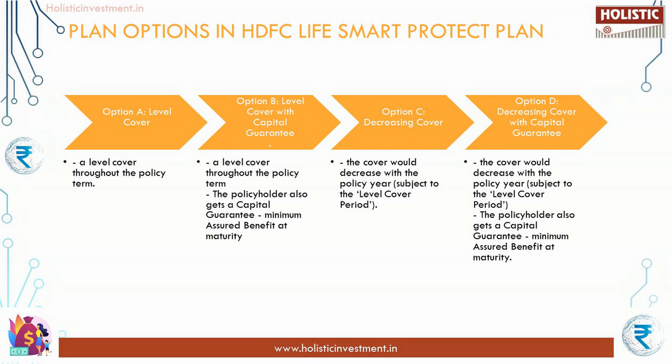Option C - Decreasing Cover: under this plan option, the cover would decrease with the policy year, subject to the level cover period chosen by the policyholder at policy inception. Option D - Decreasing Cover with Capital Guarantee: under this plan option, the cover would also decrease with the policy year, subject to the level cover period chosen at inception. The policyholder additionally gets a capital guarantee in the form of minimum assured benefit at maturity.